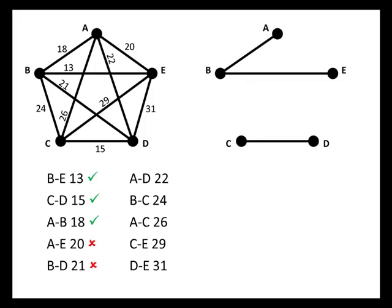Next we consider the edge from A to D. Does that create a circuit? No. Does that give us three edges that all meet at a single vertex? No. So we go ahead and add it to our graph, putting a check mark next to that edge and drawing it in. That becomes part of our final answer.